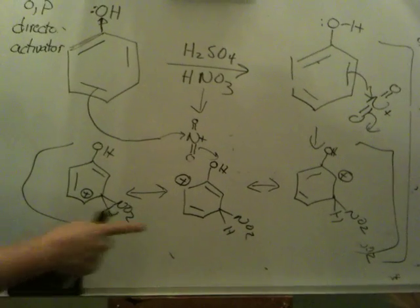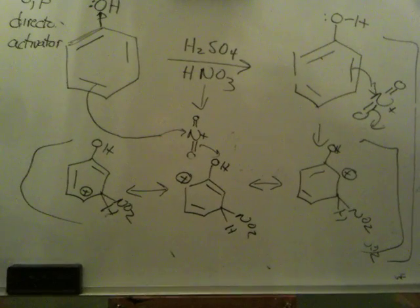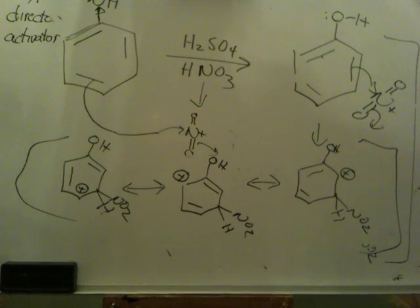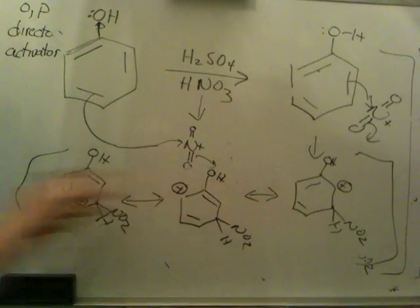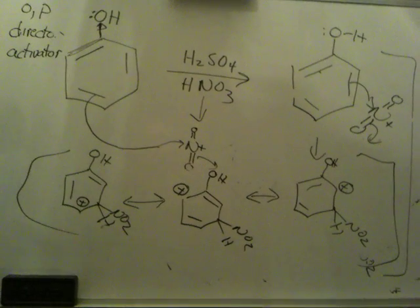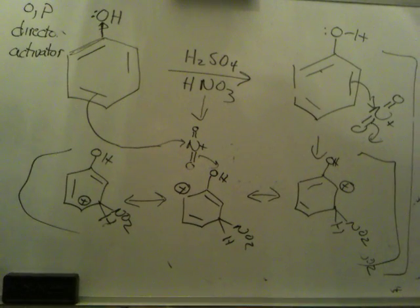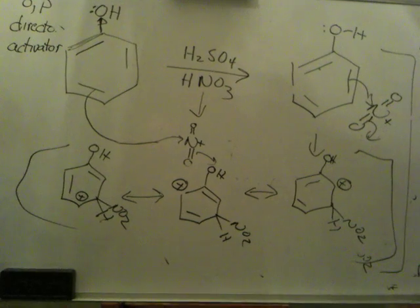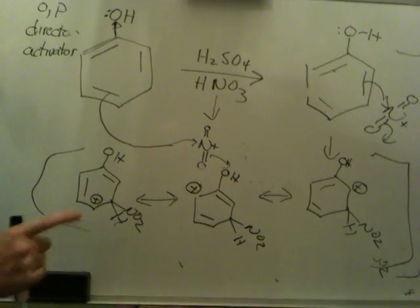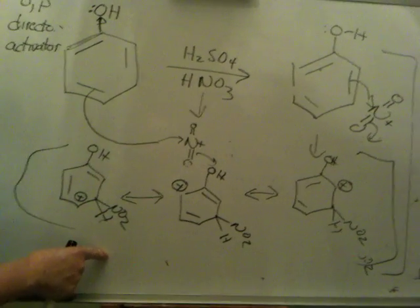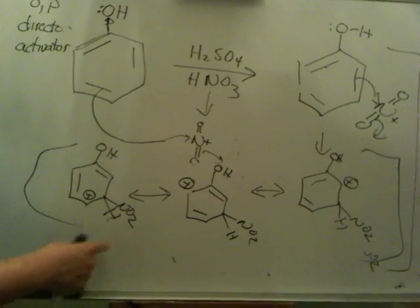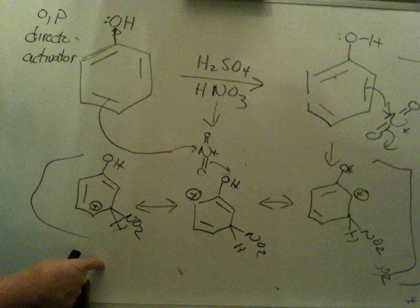Now again, ortho or para attack, we get four. Meta attack, we only get three. So which carbocation is more stable? The ortho and para attacks are more stable because the cation has more distribution of charge and therefore has a lower transition state. These reactions are really all about intermediates and kinetics. So this intermediate is less stable and because it's less stable, it forms at a slower rate. That's the Hammond postulate.